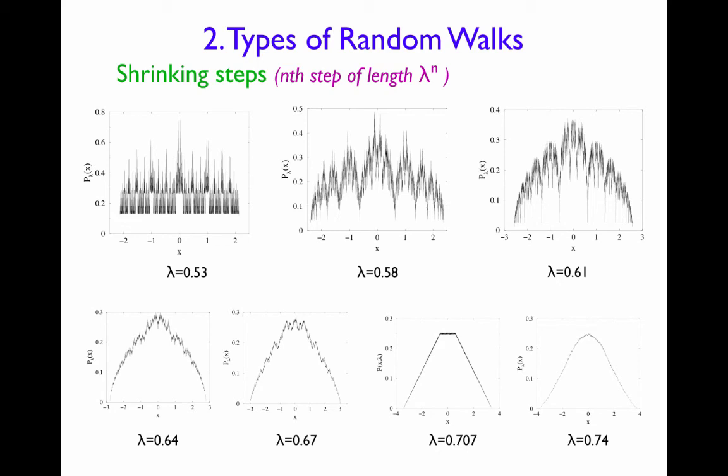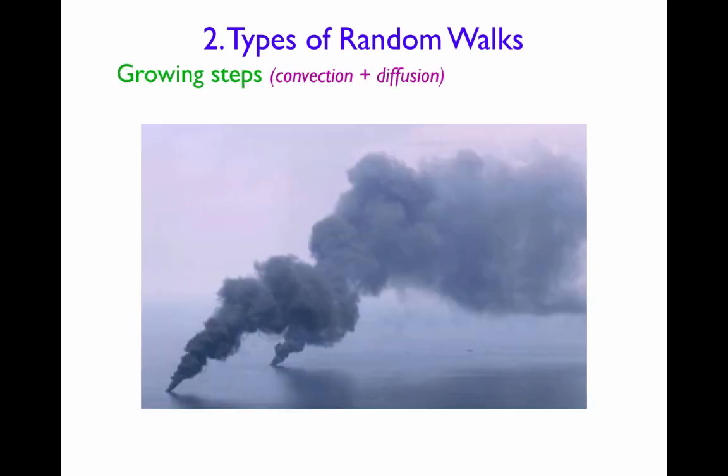Another important example that appears in nature is turbulent diffusion, or random walks that are moving in a random convection field. In this case, the typical step length of a random walk is growing with time, and one can get beautiful plume-like behavior as you see here from smoke rising from oil fires in the ocean.